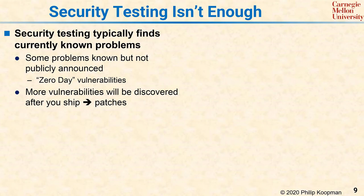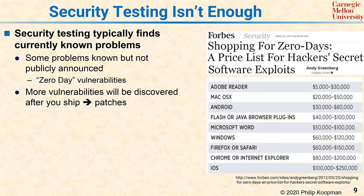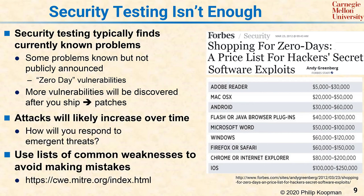The bottom line is that vulnerabilities will be discovered after you ship, and you're going to have to issue patches. Here's a shopping list of zero-day exploits — the point is that there's a market for these types of things, and depending on the piece of software, the exploits might be worth between $5,000 and a quarter million US dollars. In fact, this market is so lucrative that there are companies whose entire business model is finding vulnerabilities in software and, instead of revealing them, selling them to the highest bidder. This problem is not going to get any better. Attacks are going to increase over time, the value of vulnerabilities will increase over time, and so you're going to have to have a plan for responding to emergent threats.